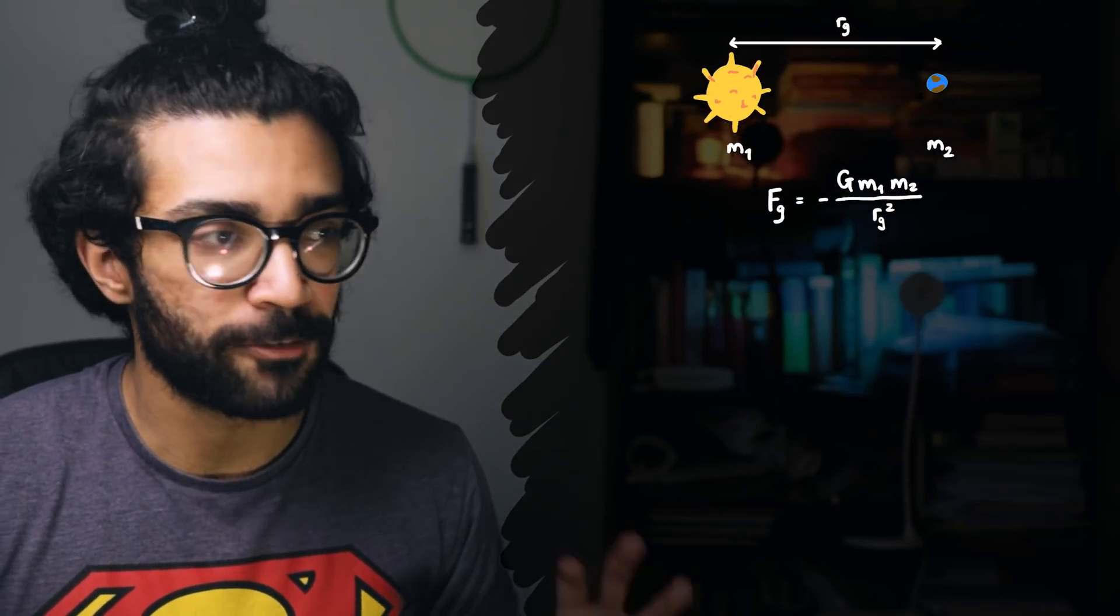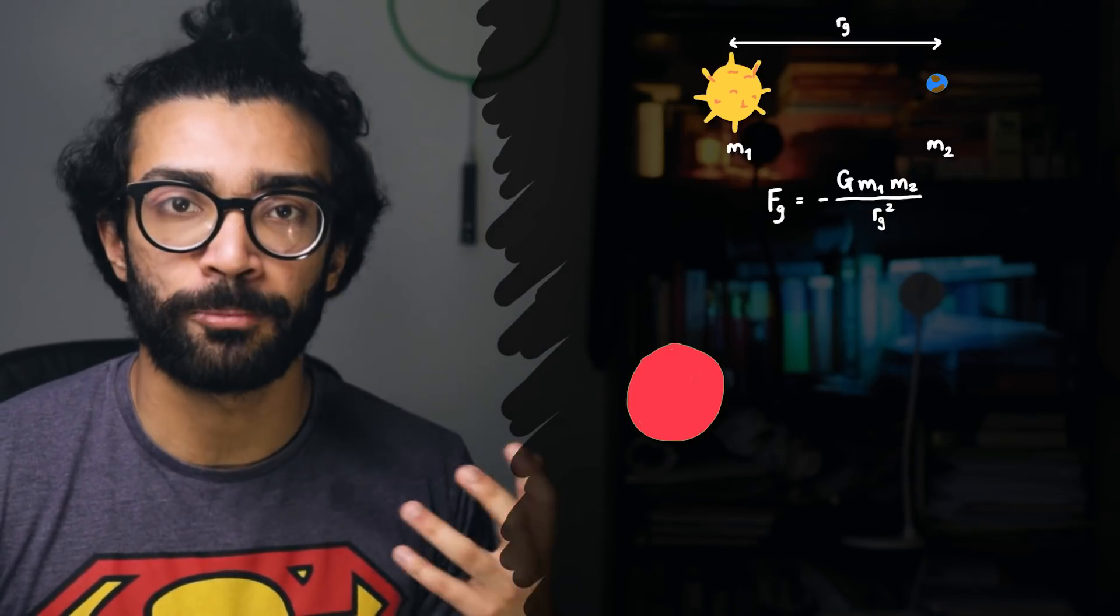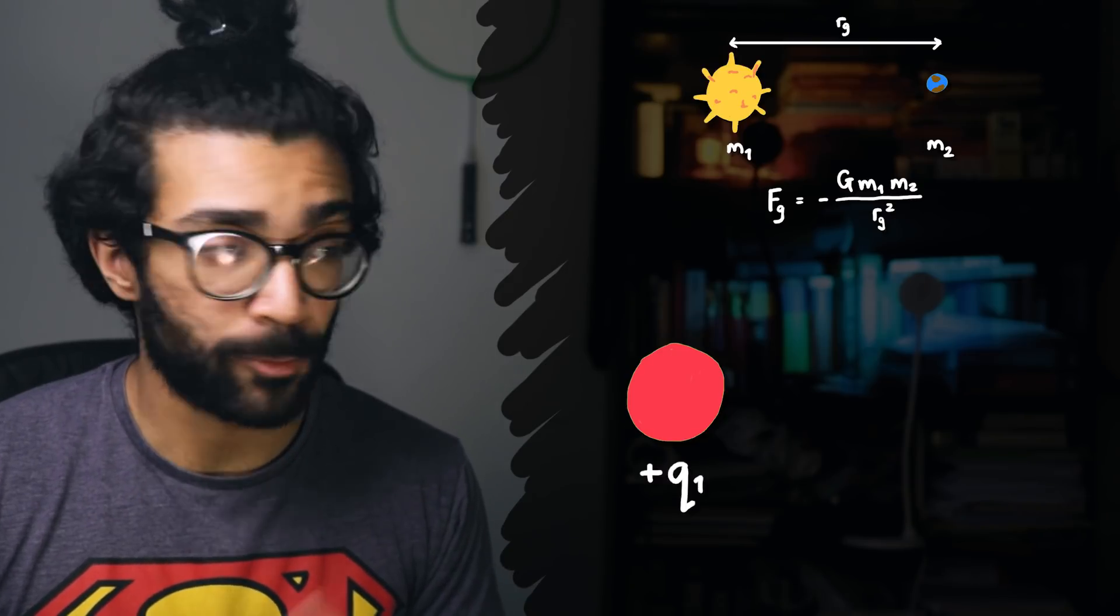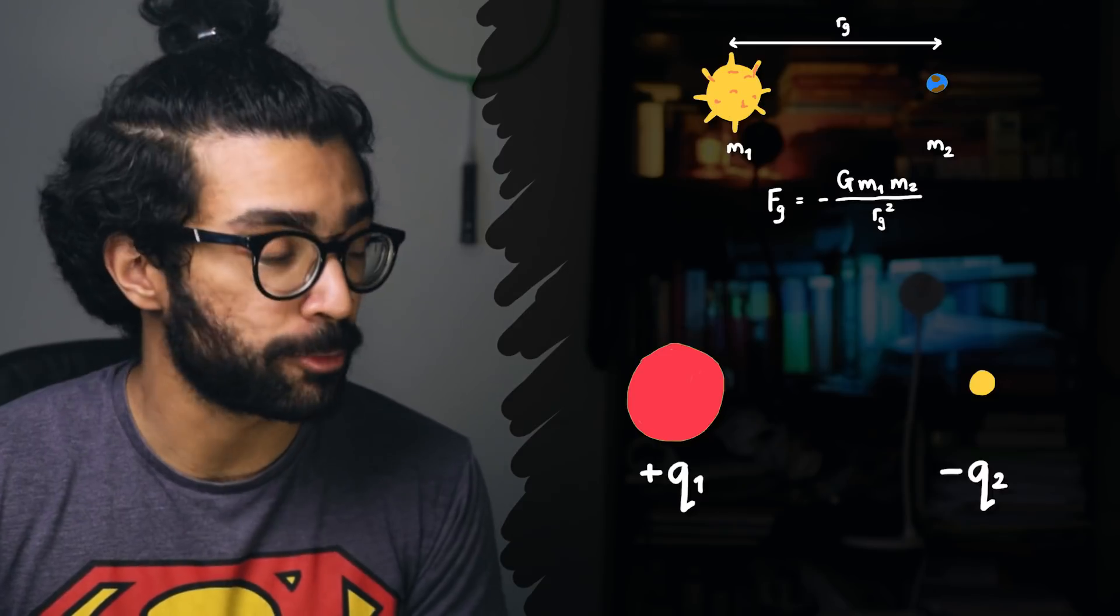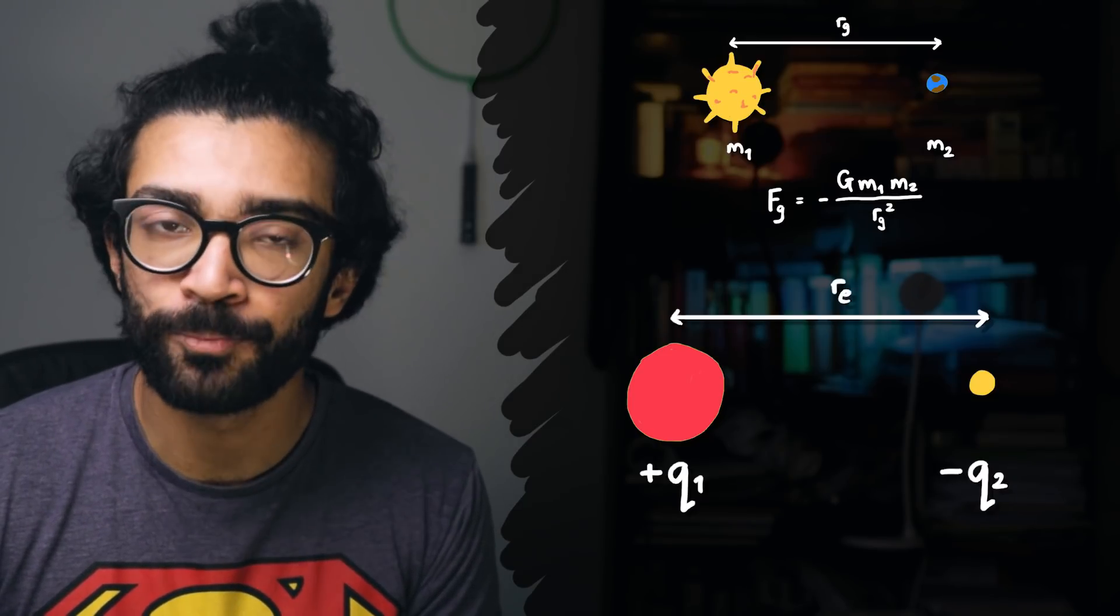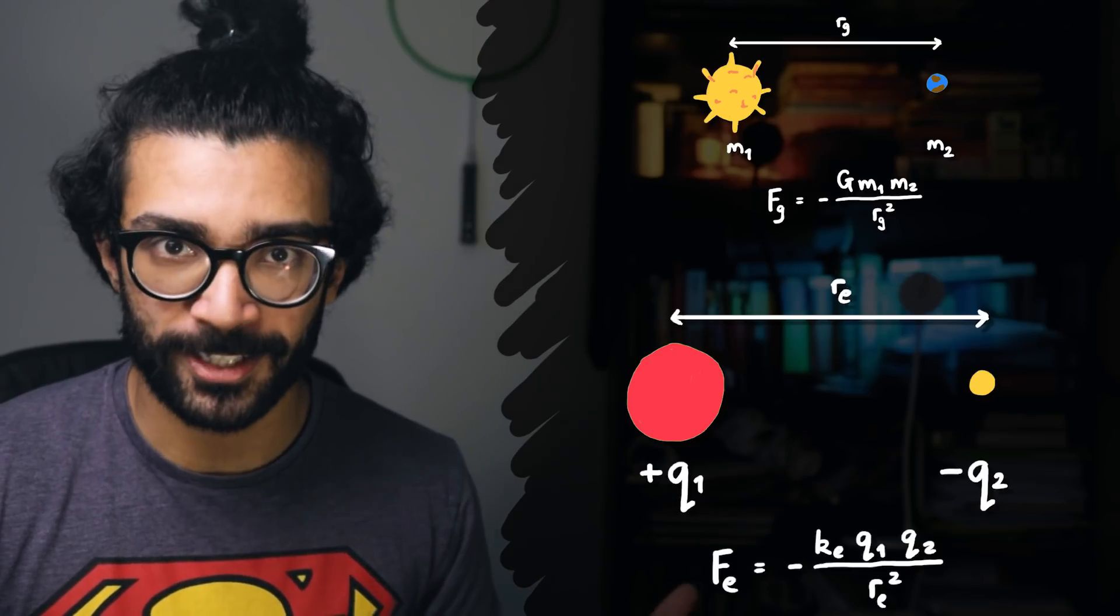If we consider a region of positive charge, so that's the nucleus of our planetary atom, we say that it has a charge of positive q1, and we think about one electron with a charge of negative q2, and they're separated by a distance of r e, then the force between the nucleus and the electron is given by this expression.